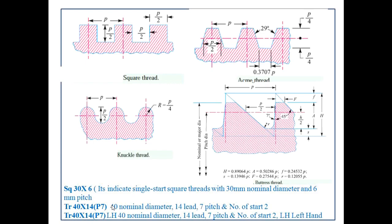The number of starts depends on the pitch and lead. The knuckle thread is a modification of the square thread with rounded top and bottom. It can be cast or rolled easily and cannot economically be made on a machine. These threads are used for rope and railway work and are usually found on railway carriage couplings, hydrants, necks of glass bottles, and large molded insulators used in electrical work. This type of thread is used for easy assembly and disassembly.